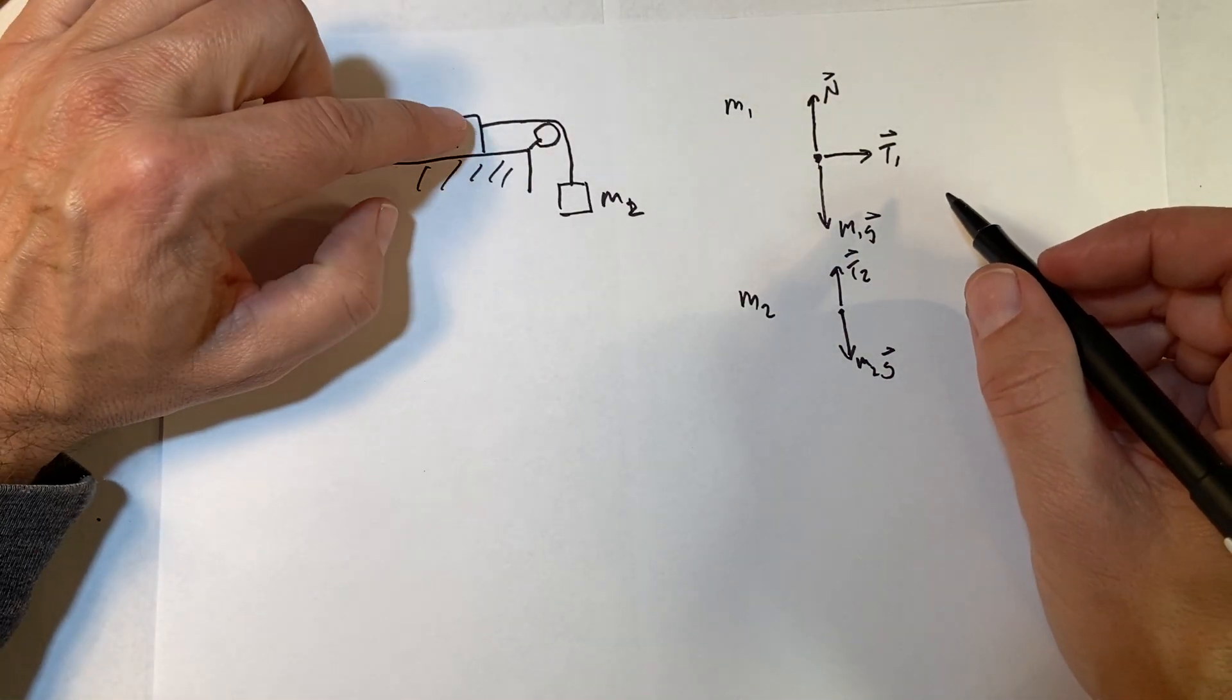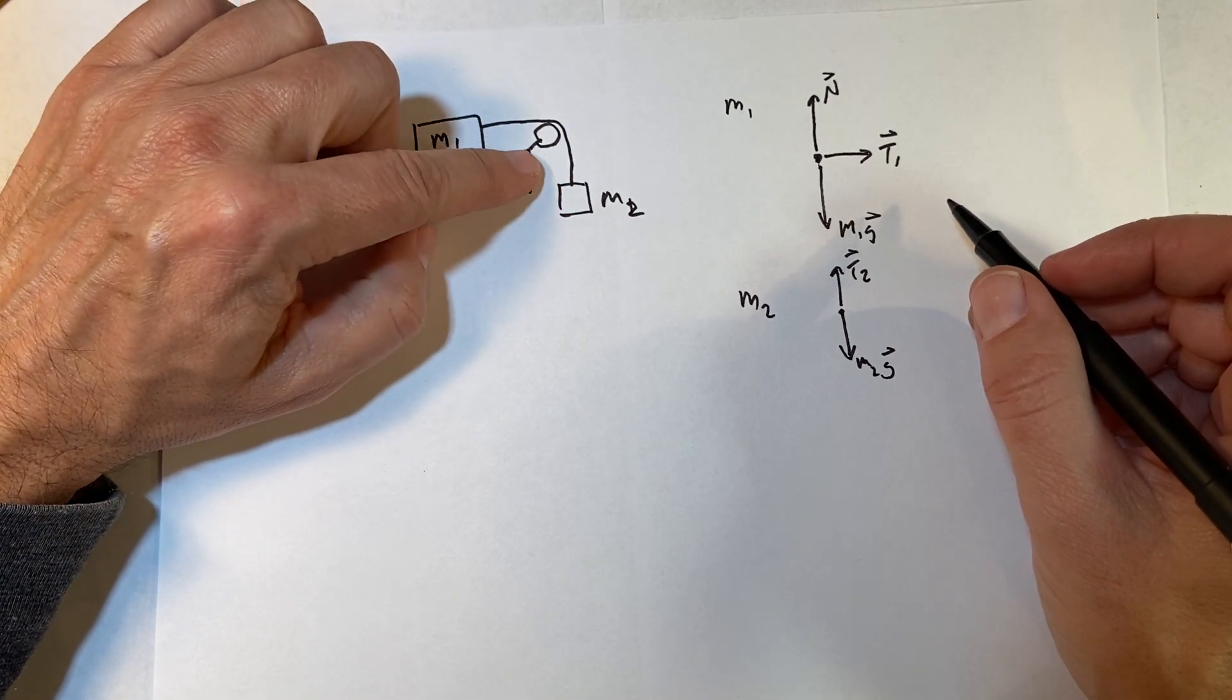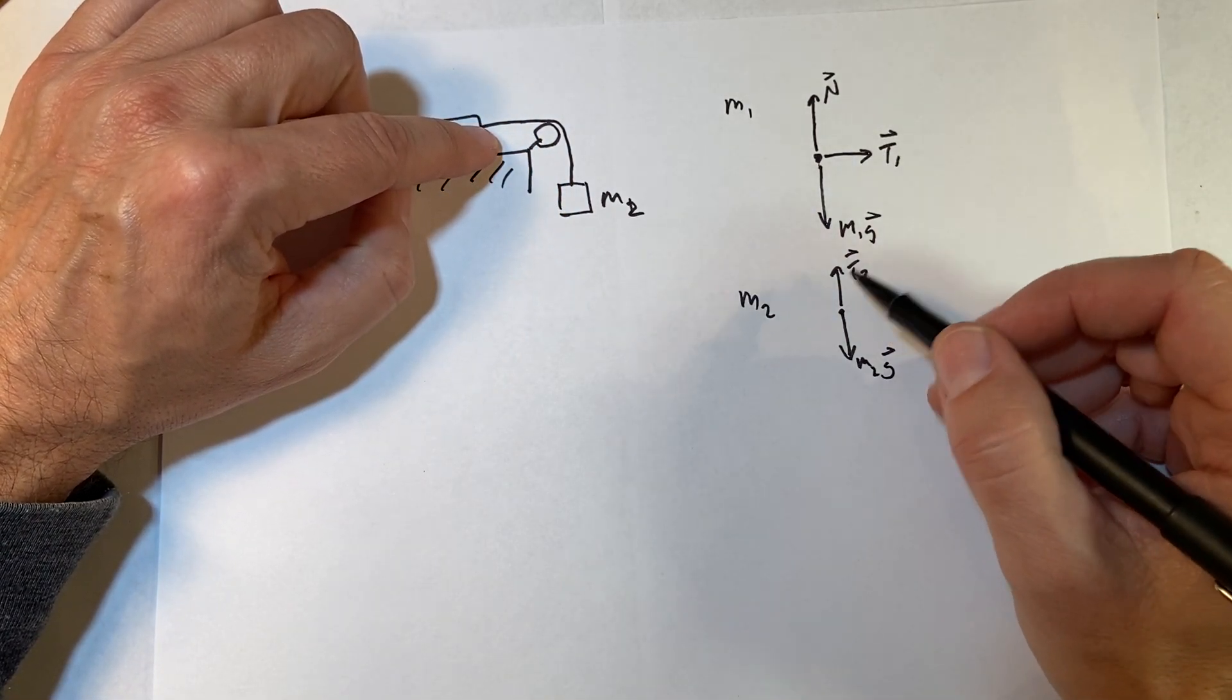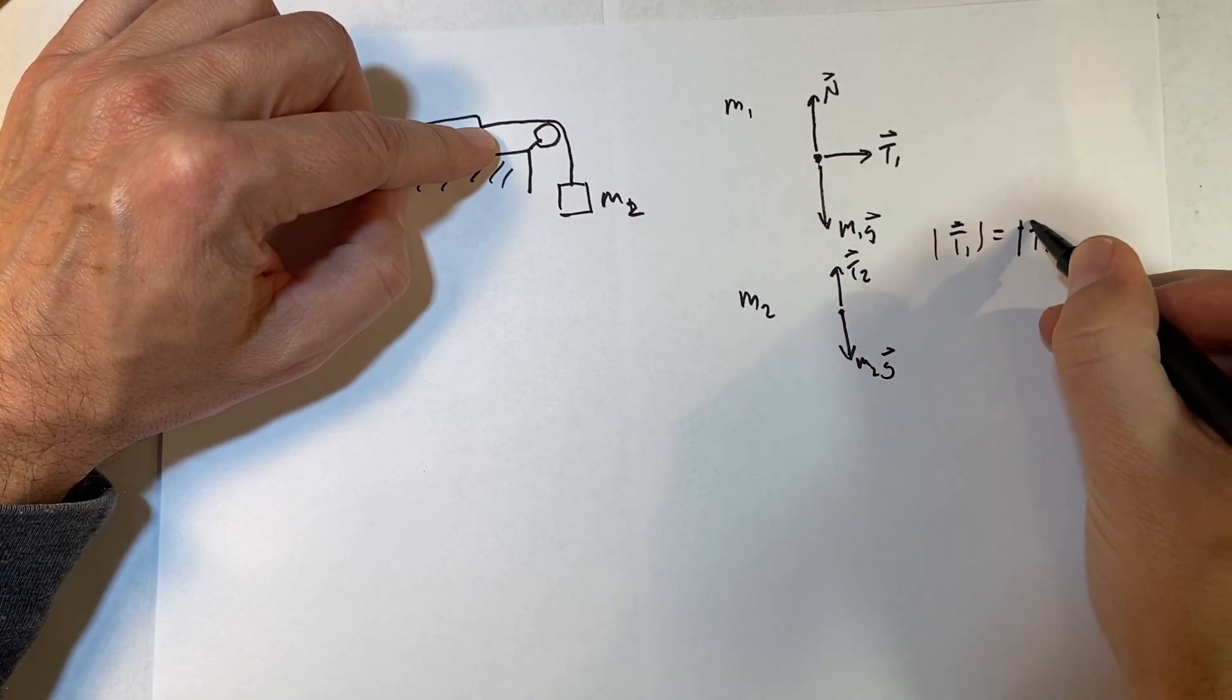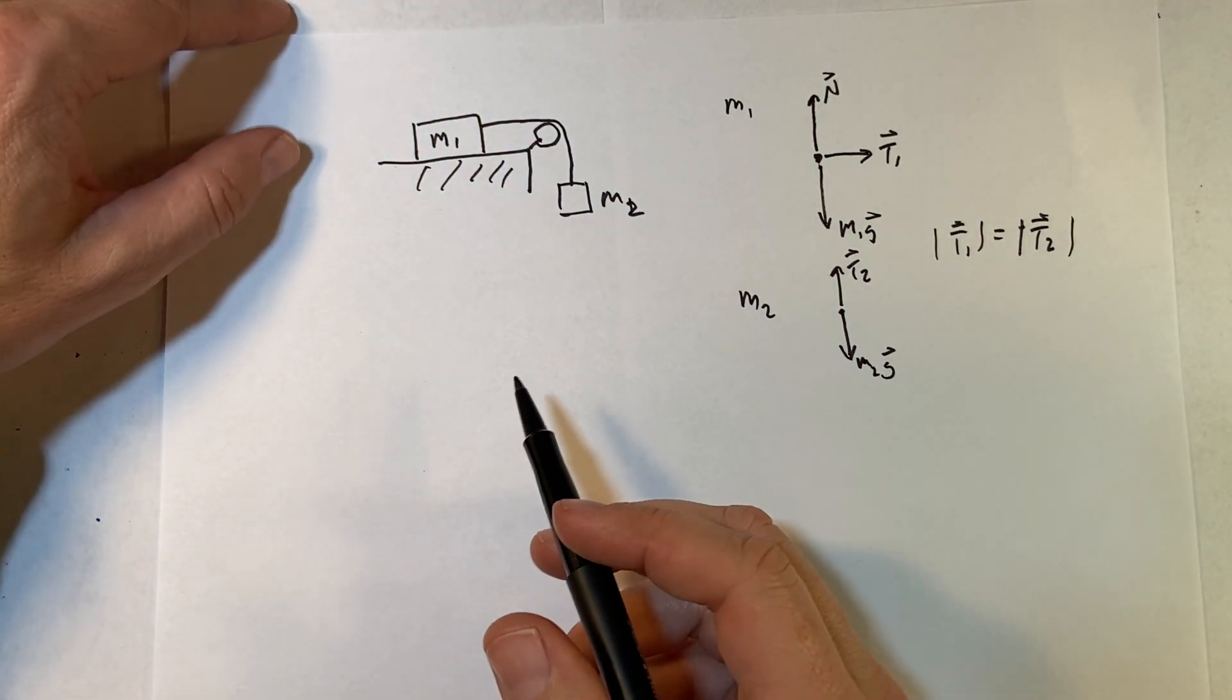Now, like before, this is the same string, so it has to have the same tension in it, even though these are in different directions. So the magnitude of t1 is equal to the magnitude of t2, because it's the same string.